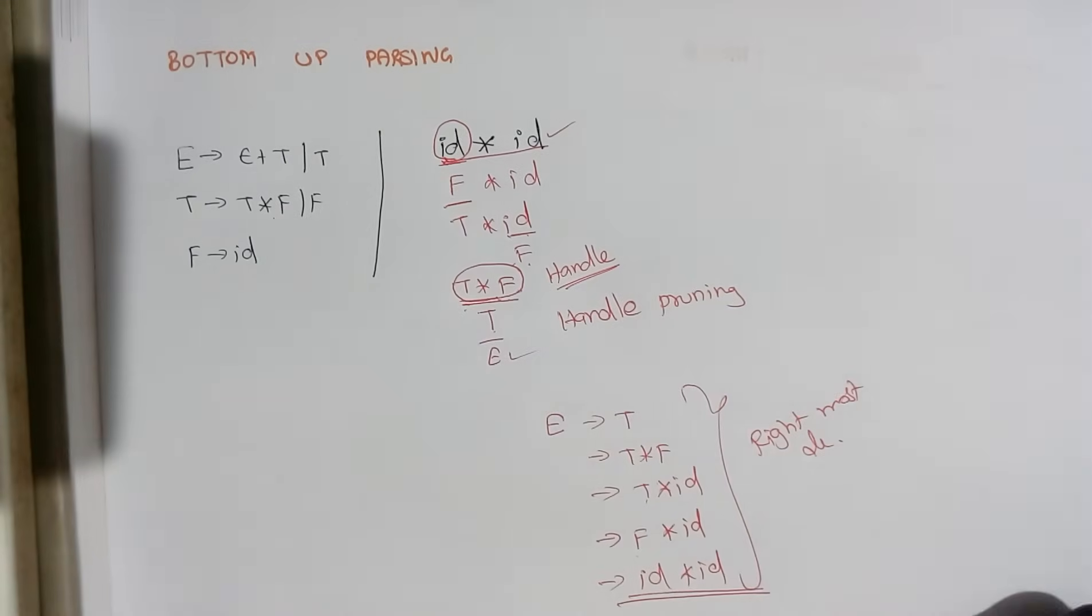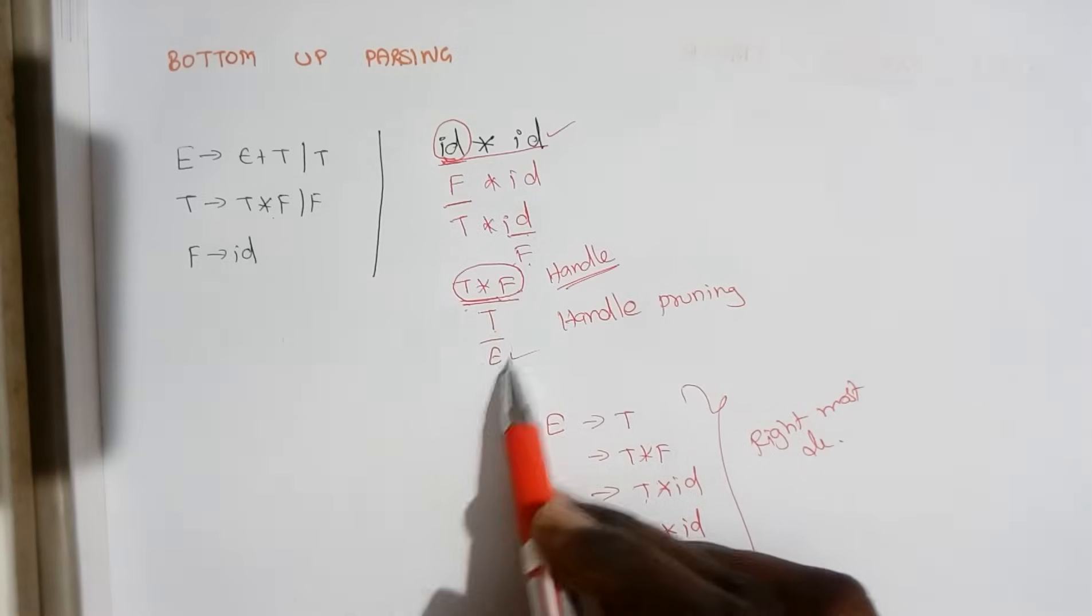Rightmost, we are using rightmost derivation in the reverse order. So that is used in case of a bottom-up parser. So all the kinds of bottom-up parsers, we are going to use rightmost derivation in the reverse order and we are going to reduce it with the starting symbol.